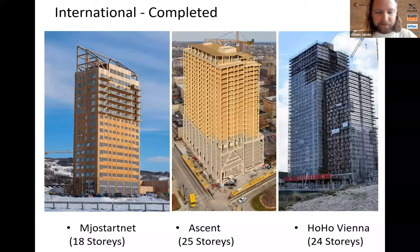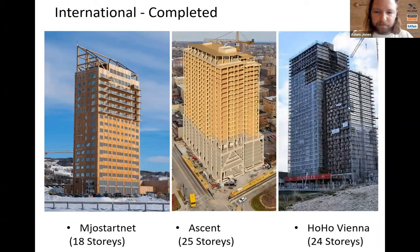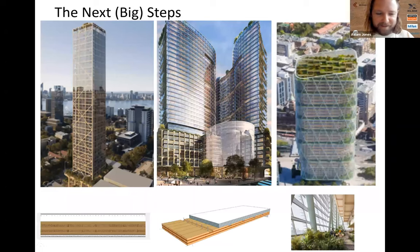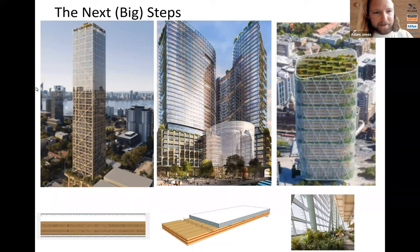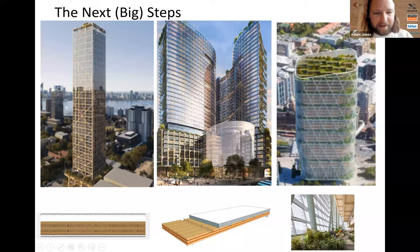For tall buildings internationally: Mias Stortnet in Norway has an external timber exoskeleton; Ascent is 25 storeys with two concrete cores providing stability; and Hoho Vienna is 24 storeys using a timber concrete composite floor deck with a concrete core. As we're going tall, we're relying on the strengths of other materials. You can point to these as precedents when showing smaller steps taken in smaller buildings. One going up in Western Australia is a fully mass timber building with a concrete core — it all comes down to the fire engineering strategy as we go taller, utilizing plasterboard on the CLT but exposing the glulam.